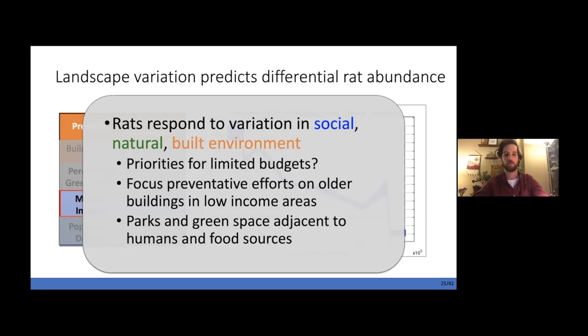And so what can we do with this information? Well, first, it's important to note that rats do appear to respond to all three types of variations: social, natural, and the built environment. But I'm hoping that these sorts of studies can provide a template for places like the Department of Health in New York, which do have limited budgets, limited man hours to give. And so we can help to prioritize the areas that really need the most attention. So for instance, older buildings in lower income areas, right, you'll likely have the most impact if you can focus in areas like that. Or perhaps the parks or green spaces that are in that sweet spot adjacent to humans and food resources. And so in this way, we can take our model and sort of get out of the academic bubble and try and bring it to the people that actually work on rats to have a conversation about what we're seeing in terms of the ecological drivers of rat abundance.